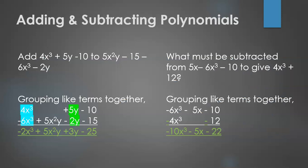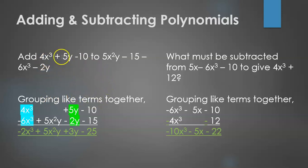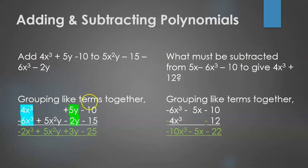Now let's take a look at how we add and subtract polynomials. We are adding 4x cubed plus 5y minus 10 and 5x squared y minus 15 minus 6x cubed minus 2y. We group like terms together: 4x cubed and minus 6x cubed are like terms, and 5y and minus 2y are like terms. That gives us the result: minus 2x cubed plus 5x squared y plus 3y minus 25.